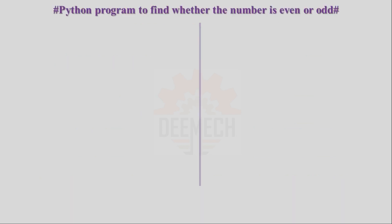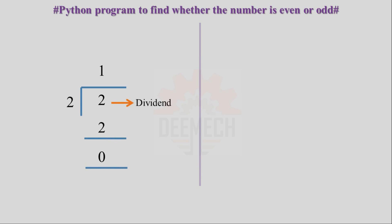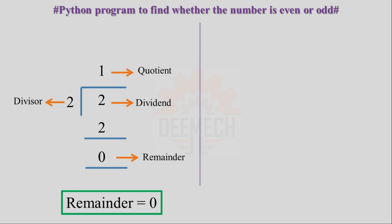Python program to find whether the number is even or odd. The user will enter a number, for example 2. That number will be divided by 2. 2 ones are 2, remainder is 0. The user-entered number is the dividend, 2 is the divisor, 1 is the quotient, and 0 is the remainder. If remainder is equal to 0, the user-entered number will be printed as even.